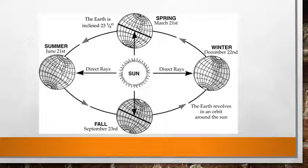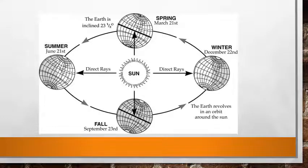Today we will study about solstice and equinox. An important term in geography is the circle of illumination, which is an imaginary line that separates the lighted part of the earth from the darkened part.